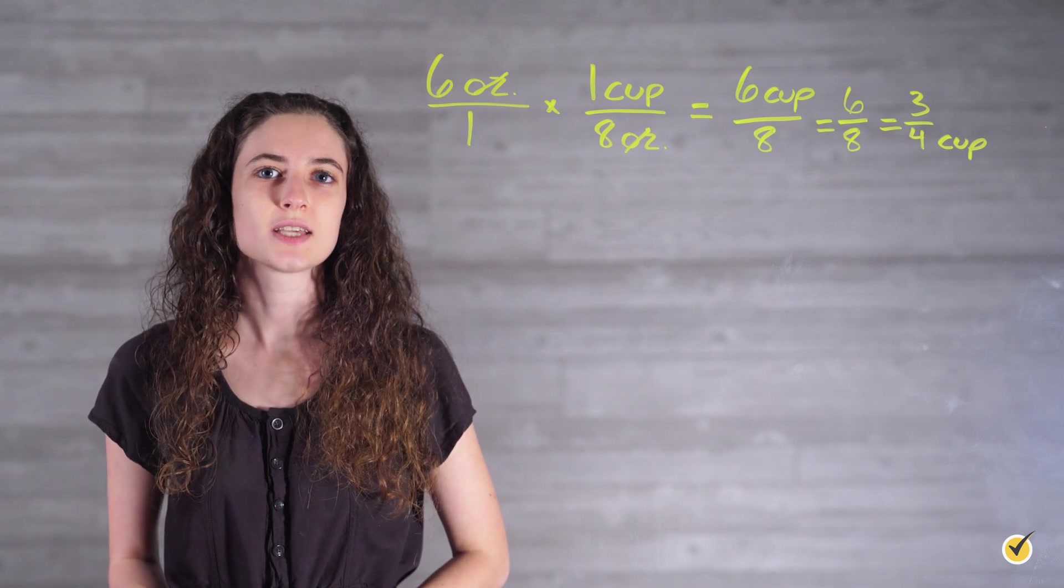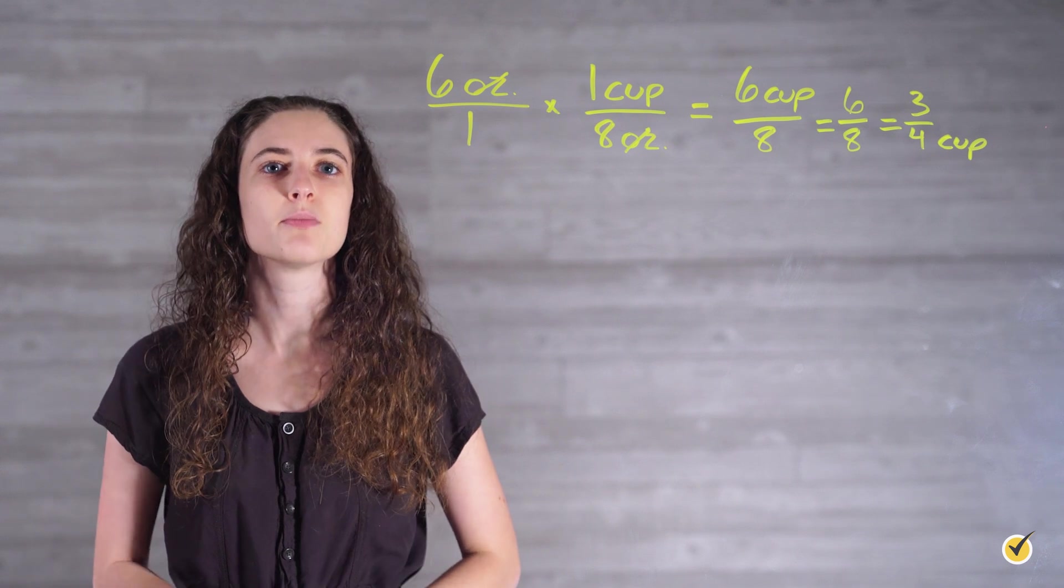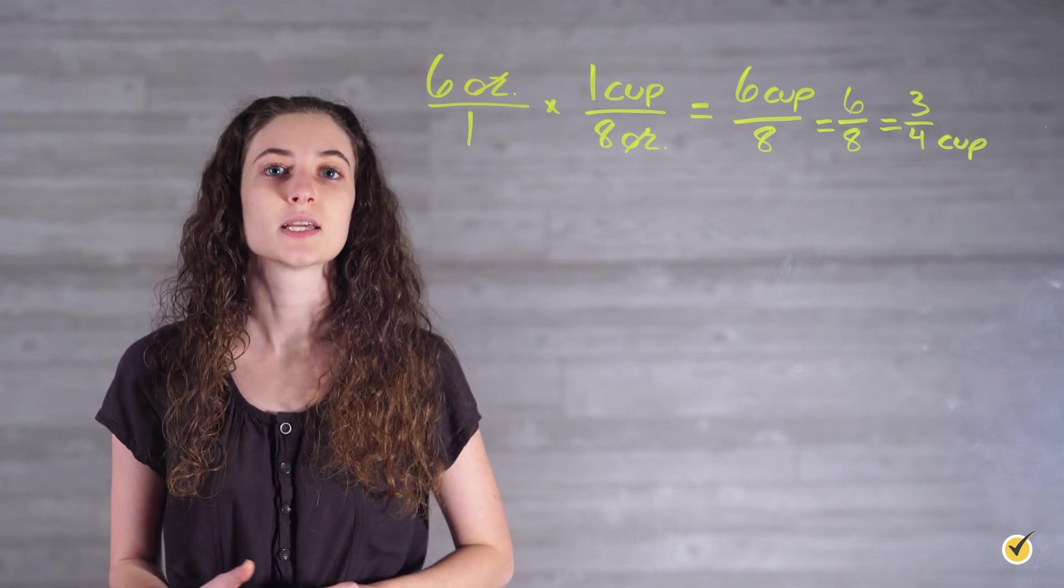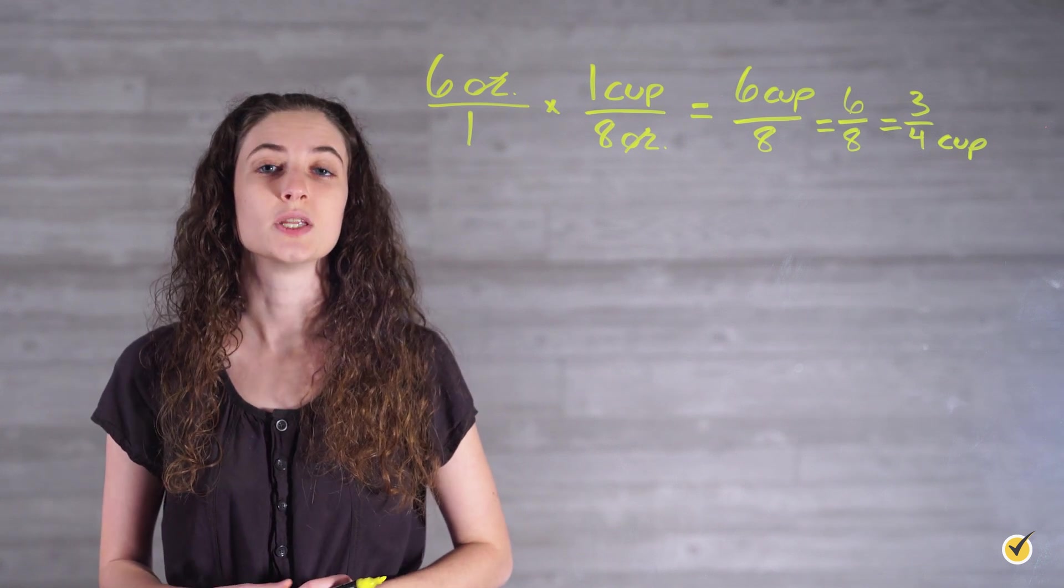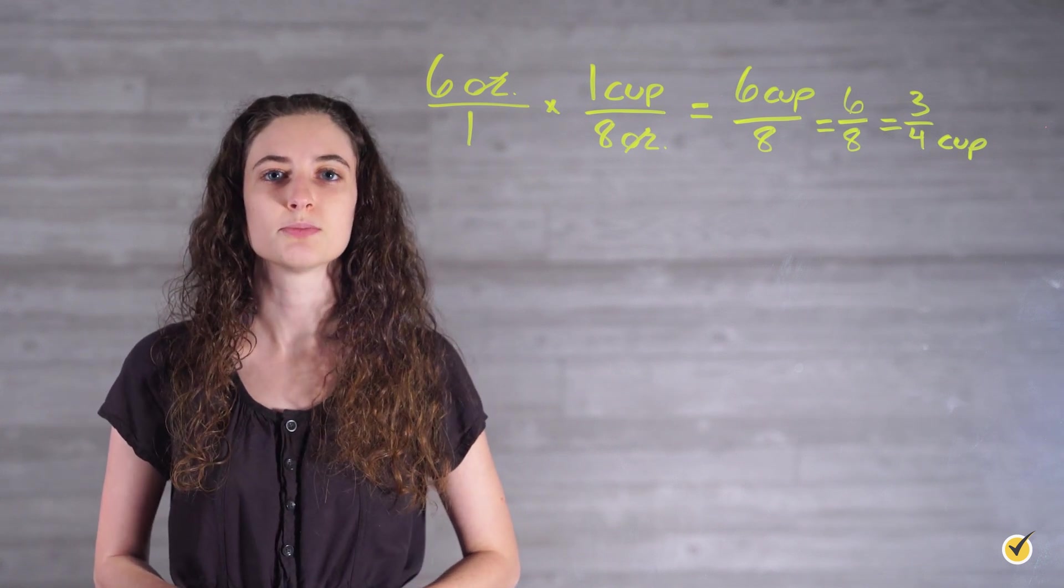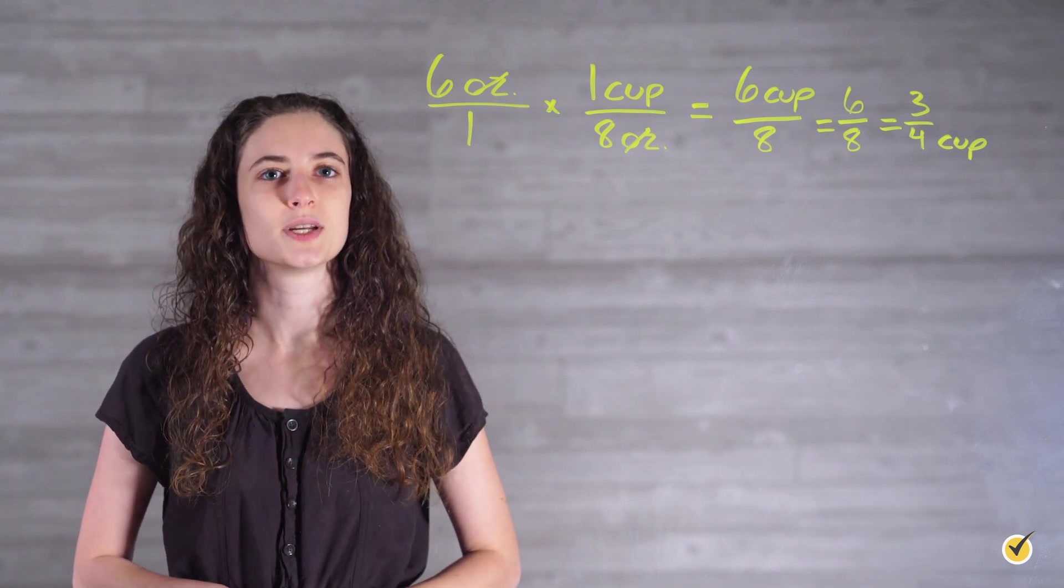Notice how our ounces cancel out on top and bottom, and we are able to simplify the fraction six over eight by dividing both parts by two. This gives us our final answer of six ounces equals three fourths cups. So we need three quarters of a cup of chocolate chips for our cookie recipe. We can use our one fourth cup measuring cup three times.